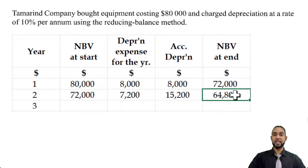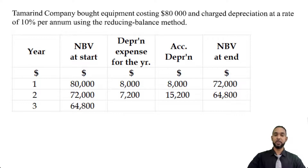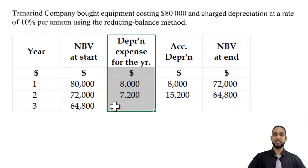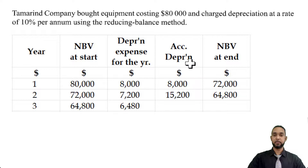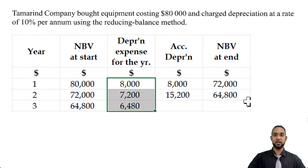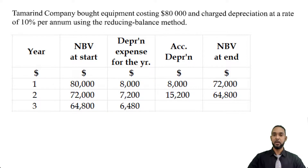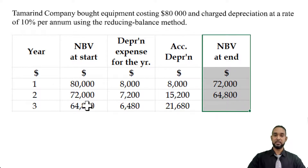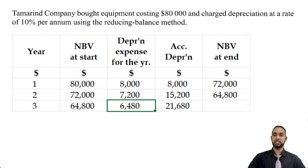The net book value at the end of year two — $64,800 — becomes the value at the start of year three. The depreciation expense for year three is 10% of $64,800, which is $6,480. Accumulated depreciation is the sum of all three depreciation expenses, giving us $21,680. Net book value at end is $64,800 minus $6,480, which gives us $58,320.